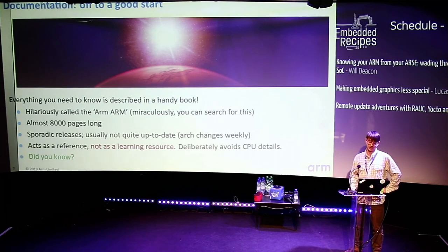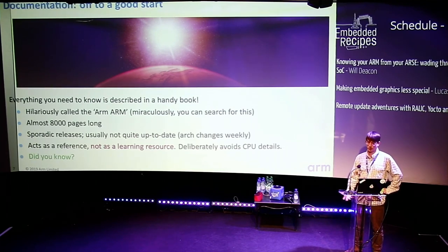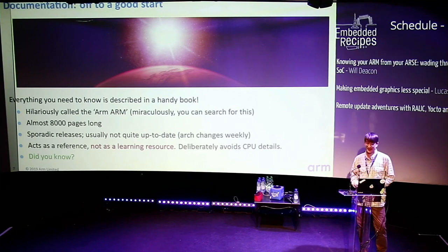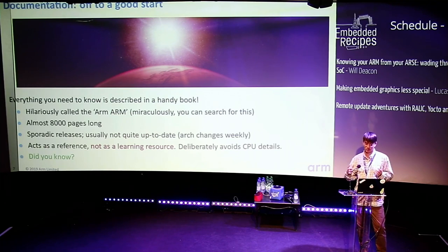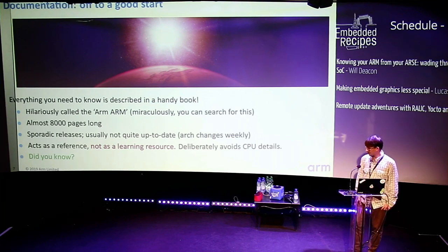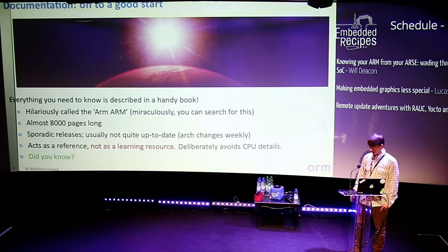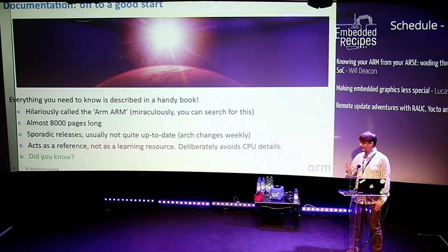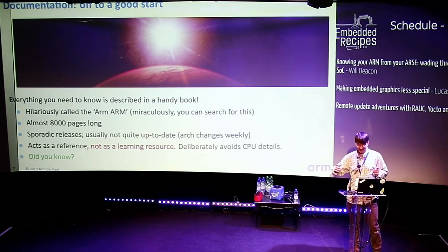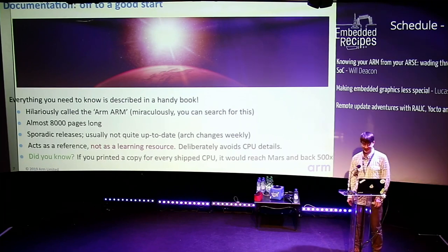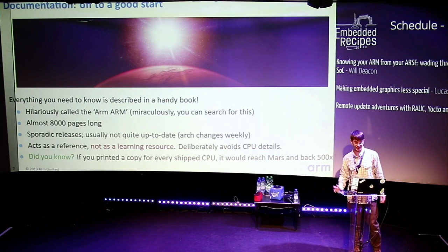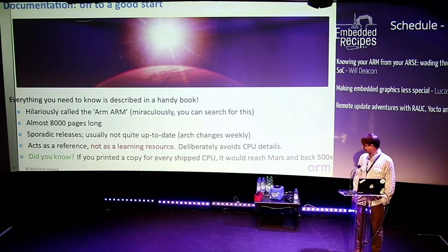It's describing the higher-level properties of the architecture so that you can write software which is portable across multiple CPU implementations. And here's a 'did you know' fact: if for every Arm CPU that shipped you printed out a copy of this book and laid it end to end, it would go to Mars and back 500 times. I could be off by many orders of magnitude, but assuming my quick hack on a piece of paper was right, that's a lot.